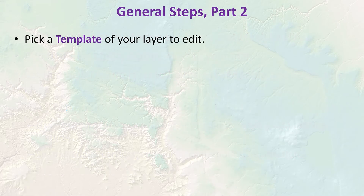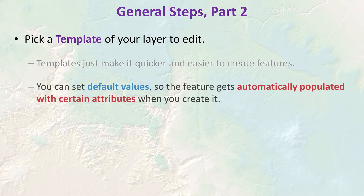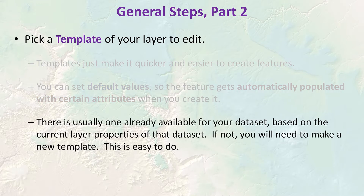Now we're ready to start creating features. First, we have to pick a template of the layer to edit. Templates make features quicker and easier to create — they simplify tedious parts of creating spatial data, like manually entering attribute values for everything. You can set default values in a template, meaning each new feature you create will be automatically assigned those attribute values. There's usually a template already available based on the current layer properties of the data set.